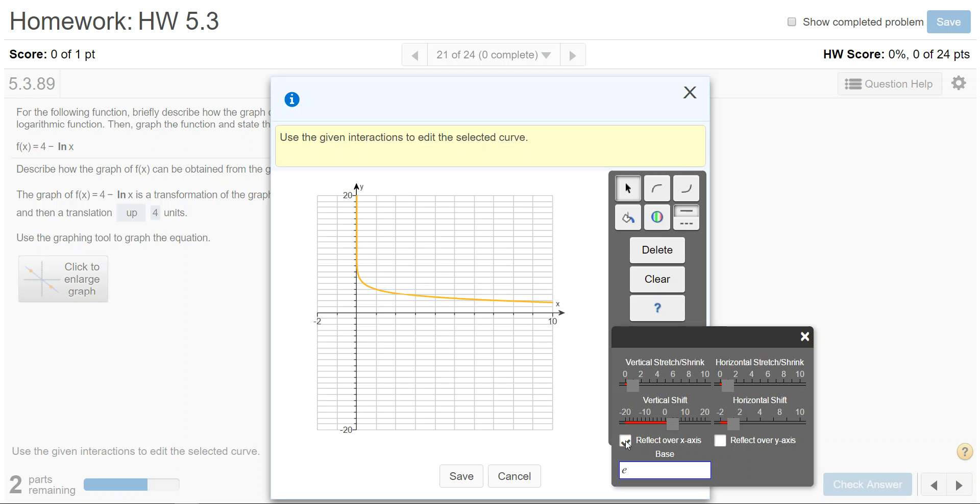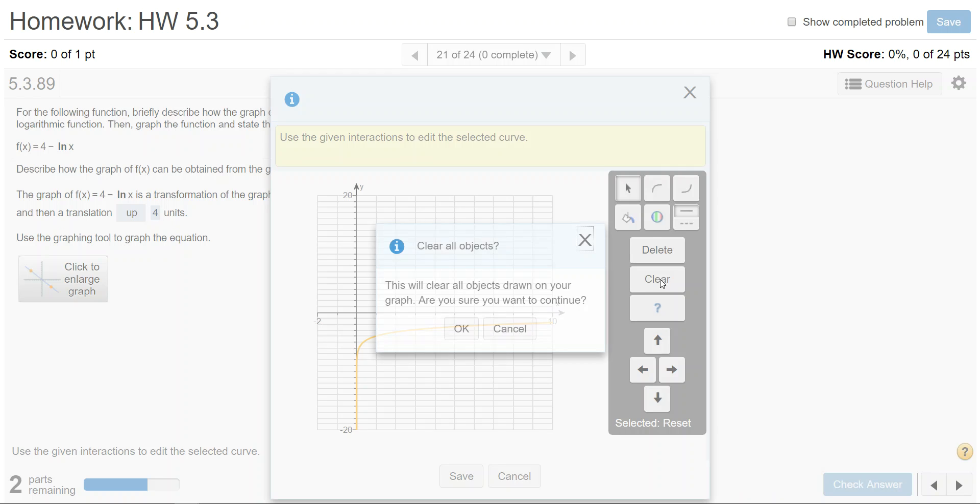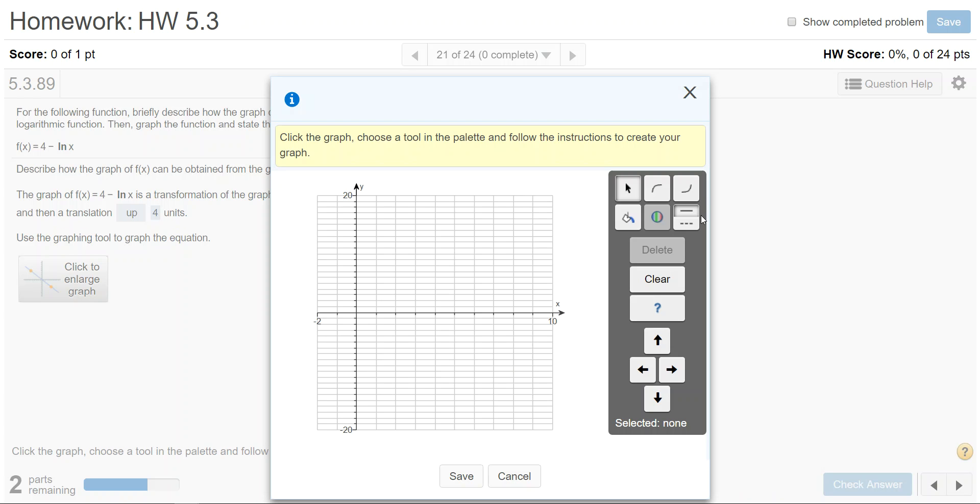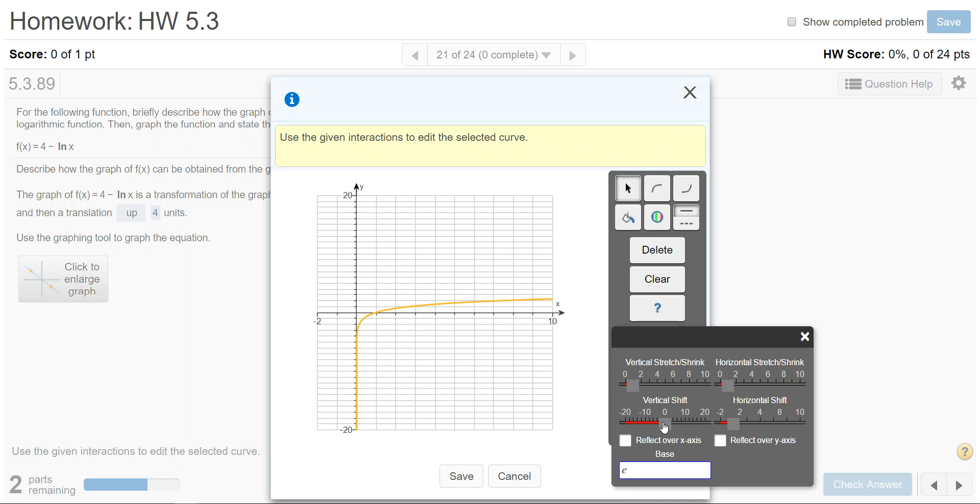Now notice that if I didn't do this in that order, so if I clear and start over, it's going to give you a very different graph. If you shifted up 4 first and then clicked to reflect it over the x-axis, it's in a very different position.